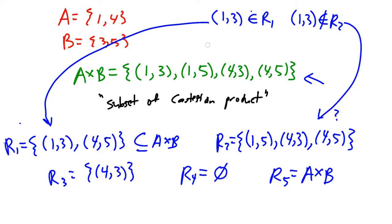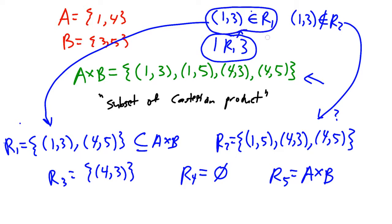There's another bit of notation that mathematicians often use. You can write '1 R1 3' — that's actually like a sentence meaning '1 is R1-related to 3.' It means exactly the same thing as (1, 3) ∈ R1. Over here we could write '1 R̸2 3' — by putting a slash through it, just like we put a slash through the element-of sign, it indicates that that ordered pair is not in the relation.